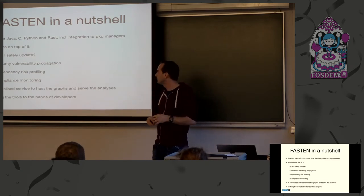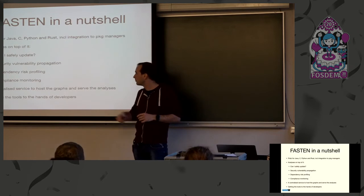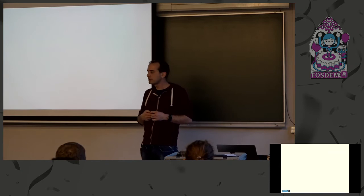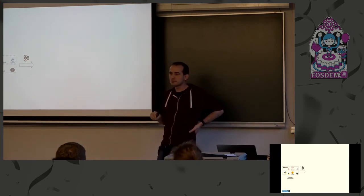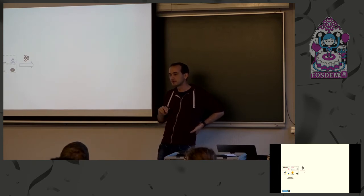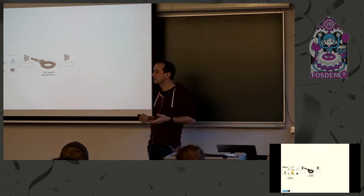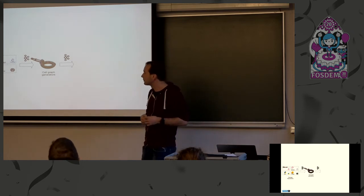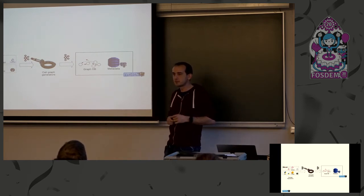On top of the actual call graphs, we can do various analyses that will be offered as part of a package manager — such as 'can I safely update?' and security bug propagation. We get updates from four repositories — Java, Debian, PyPI, and Cargo — in a streaming fashion, so we have streams of new package releases. We have a call graph generator per language: for Java there are already high-quality options; for Python we are developing our own because no existing tooling exists; for Rust we are also developing our own; for Debian we use existing tools.